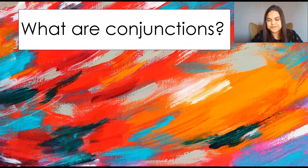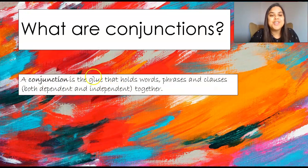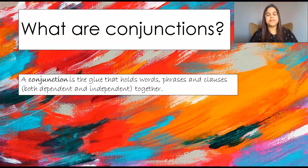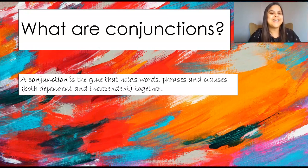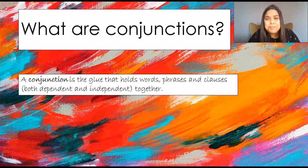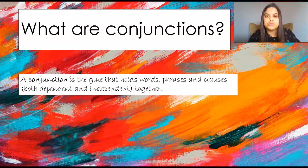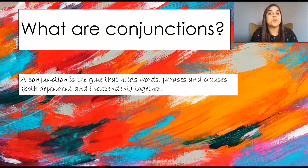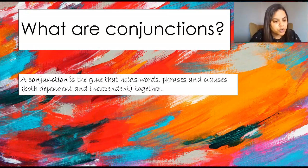What are conjunctions? A conjunction is the glue. I use the word glue because I want you to understand that a conjunction puts two things together. It holds two words, two phrases, or clauses together — both dependent and independent clauses. Some of you are thinking: what is an independent and dependent clause? I said earlier that you have to remember some things before we can really get into conjunctions, so I'm just going to give you basic examples of conjunctions now.